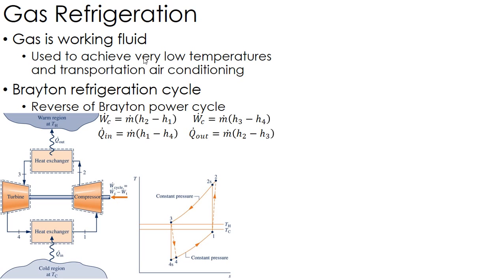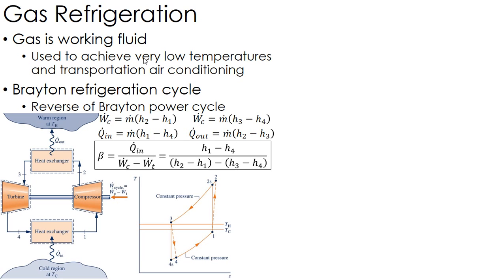The coefficient of performance for a refrigerator is Q_in — the heat transfer at the cold space — divided by the total work, which is compressor work minus turbine work. Unlike vapor compression where we had an expansion valve, here we actually use a turbine because we get a significant amount of work relative to the compressor out of this.